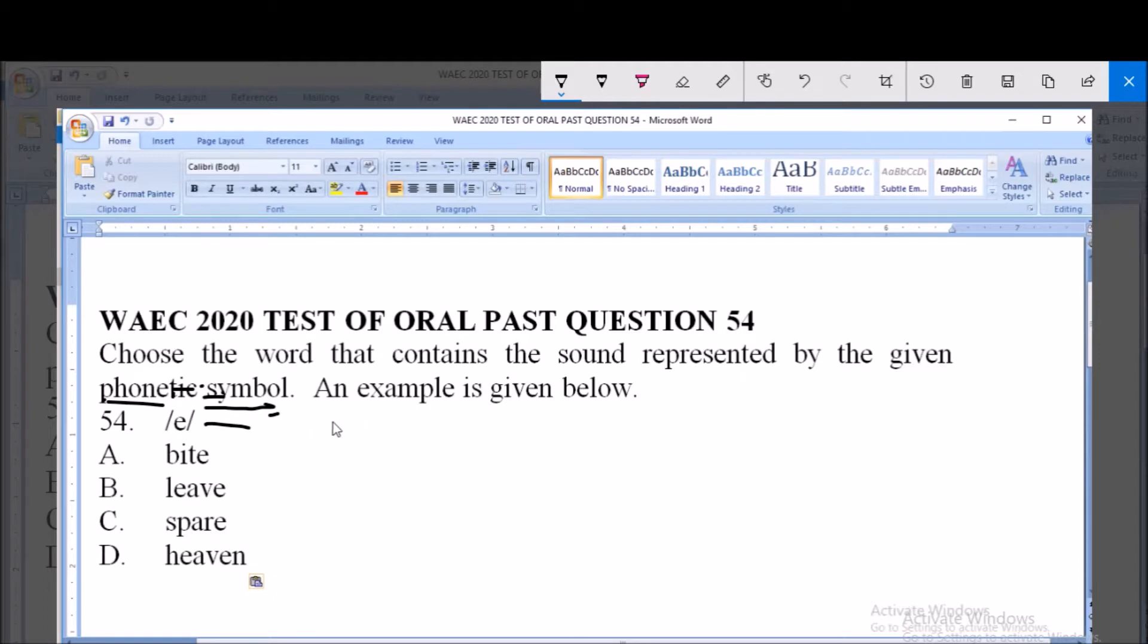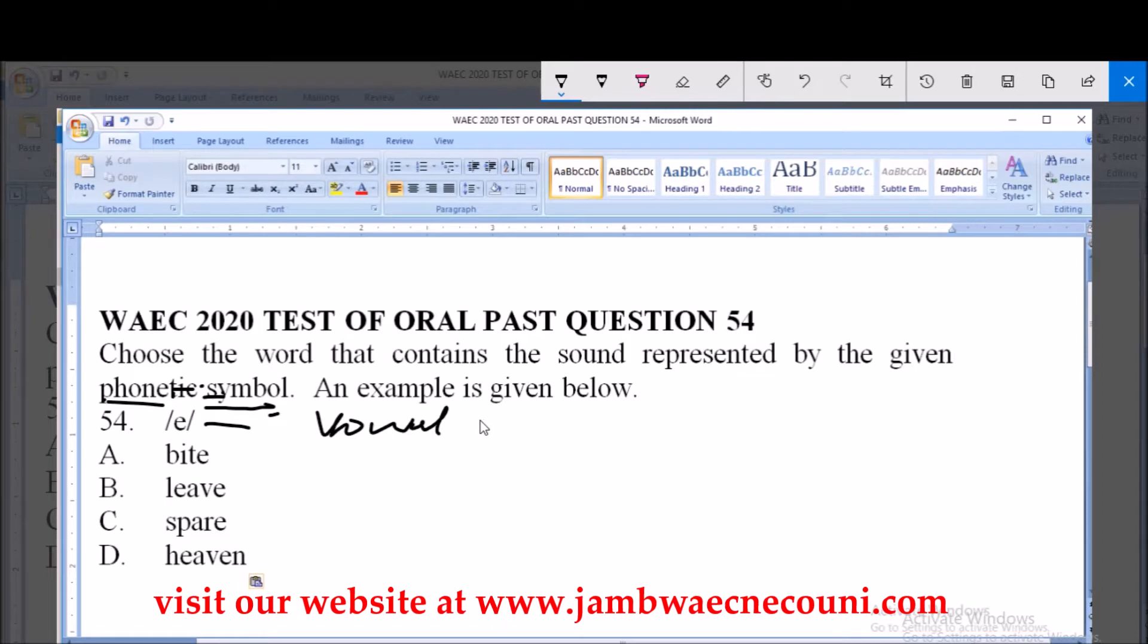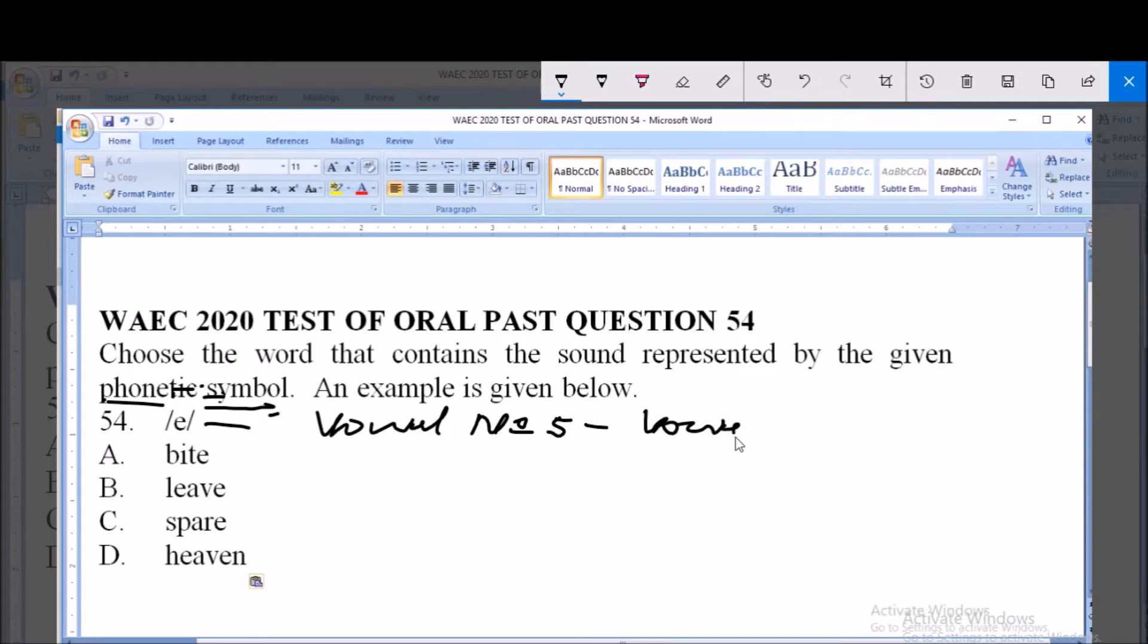The given phonetic symbol here is a vowel, vowel number five. In this sound there is no short or long, it is only two. Remember in our alphabetical letter we say A, E, I, O, and U. So this is the A sound.